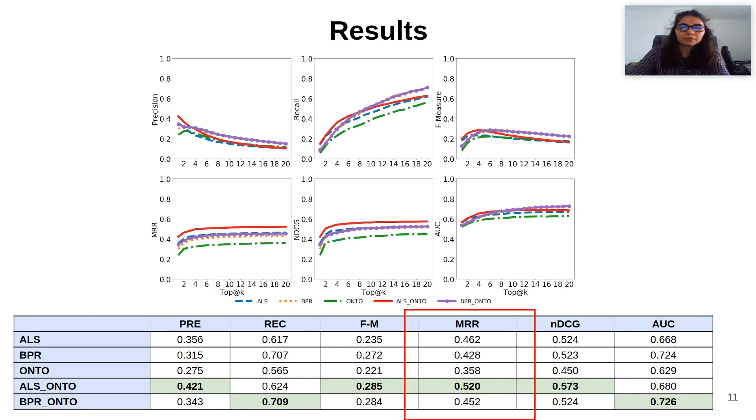This result suggests that combining collaborative filtering with ONTO will reorder the items, moving the more relevant to the top positions of our ranked list.